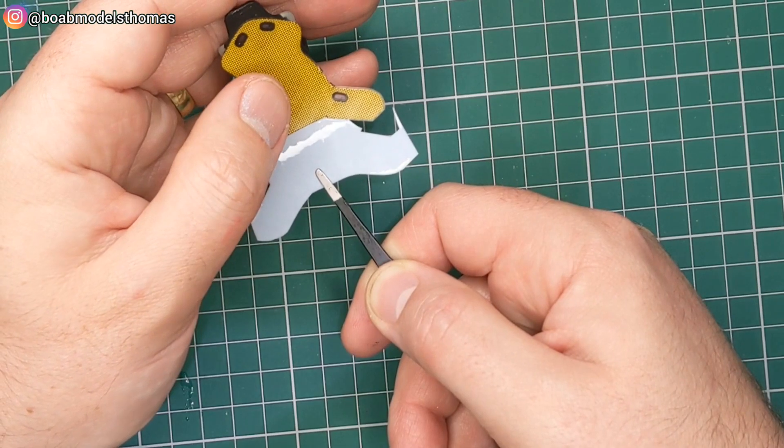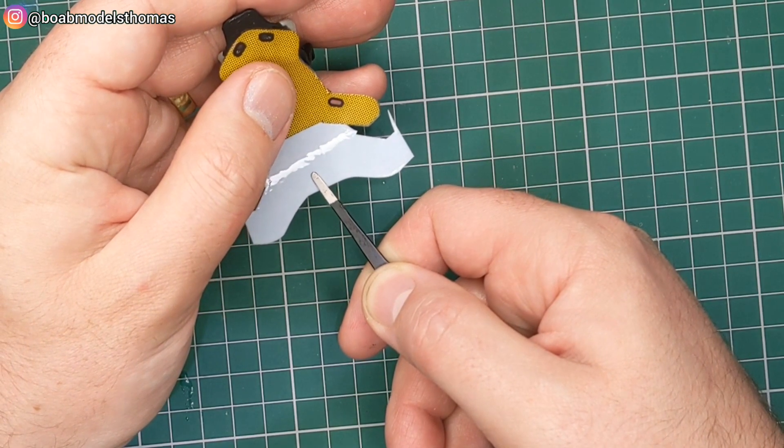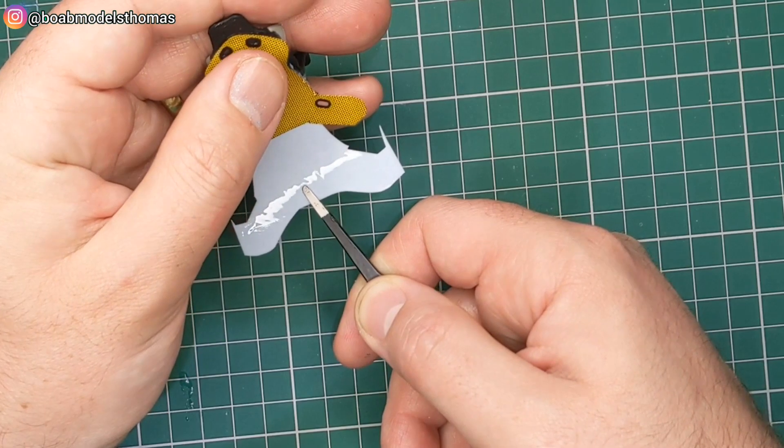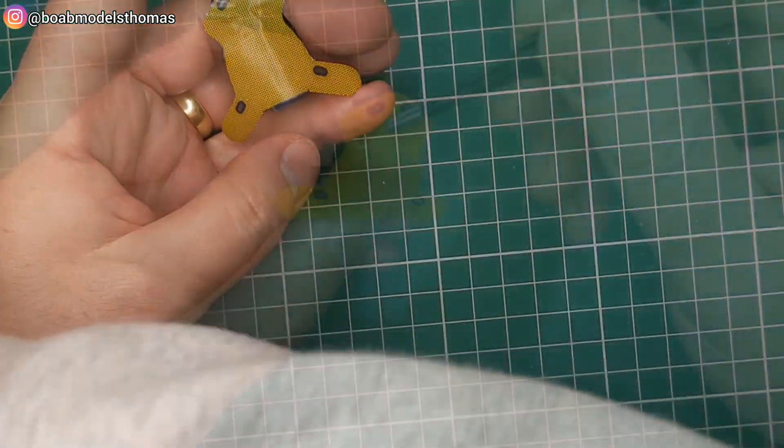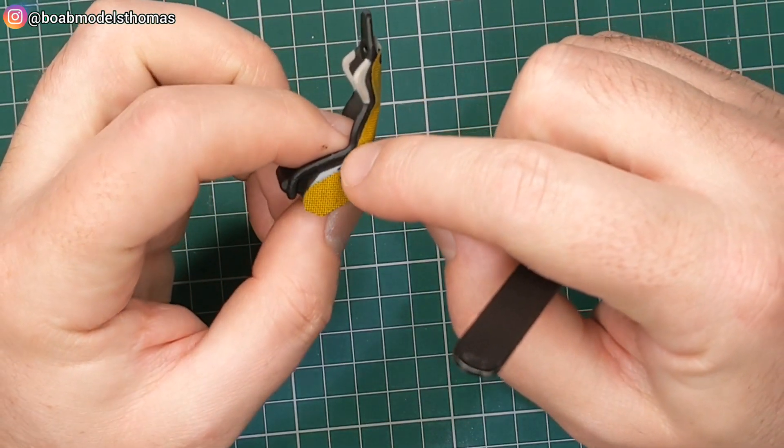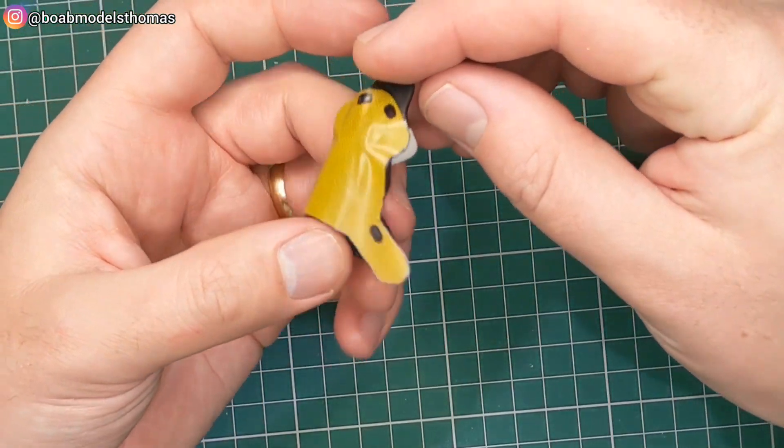The next step is for this particular one to add the decals. Now this one actually doesn't have holes in the decals where the seat belts go through, so I'll need to add those holes with a blade later on.